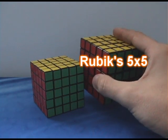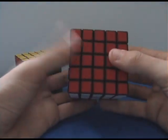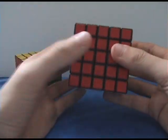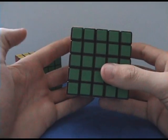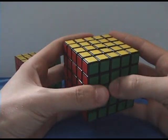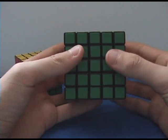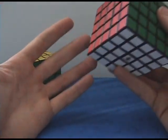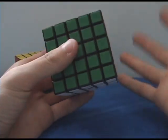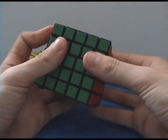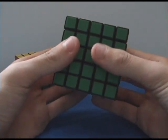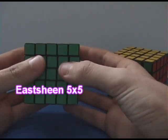First, we have the Rubik's brand which is what most people have. The first thing you'll notice about the Rubik's brand is it's very large and it's very heavy. And although most people think those are negative traits, I'm here to tell you not necessarily. Because my hands are very large and the Rubik's 5x5 fits my hands much better than the Esheen 5x5 does.